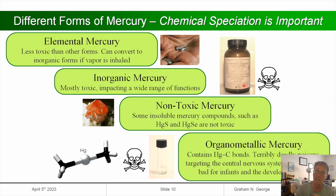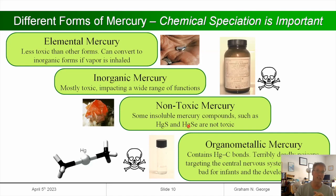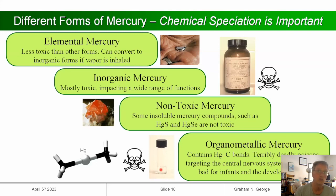There are also non-toxic forms of mercury like mercury sulfide and mercury selenide — non-toxic because they are so insoluble in water. You can literally ingest gram quantities of mercury sulfide and suffer no ill effects providing that's all you're ingesting. Finally there's organometallic mercury — these are deadly poisons that target the central nervous system and are particularly awful for unborn children and infants.